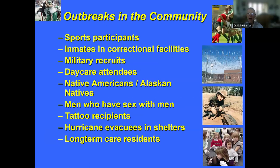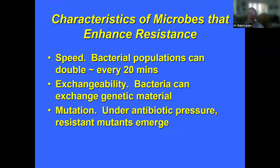Outbreaks in the community are common, primarily among groups that have close contact. These are examples from the literature: football teams, inmates in correctional facilities, military recruits, daycare attendees, Native American and Alaskan natives, men who have sex with men, tattoo recipients, hurricane evacuees, and long-term care residents. What they all have in common is frequent interchange and direct contact.